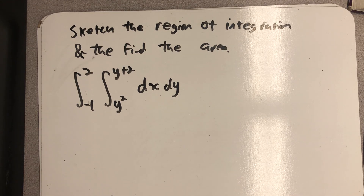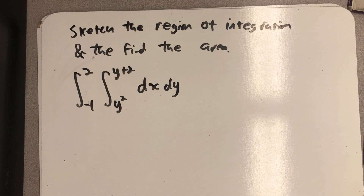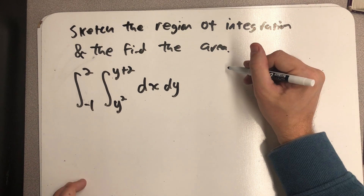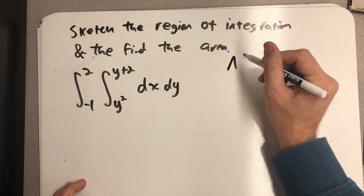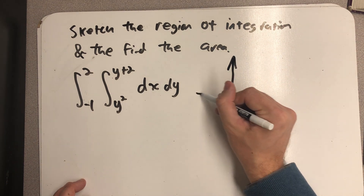Sketch the region of integration and find the area. I'm given a double integral — an iterated integral — and I'm asked to first consider what area I'm actually thinking about.